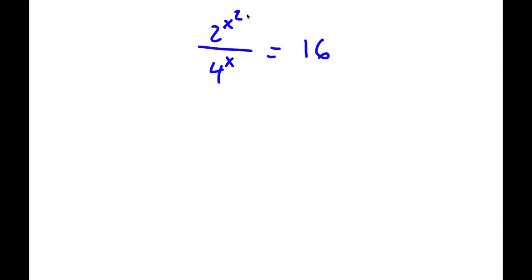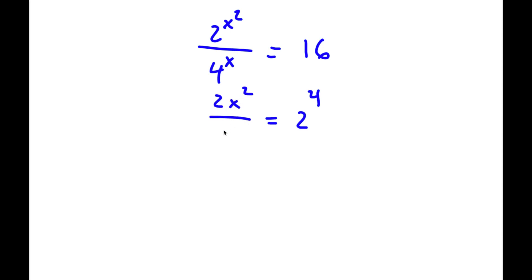Alright, so I have 2 to the power of x squared over 4 to the power of x is equal to 16. Now 16 here, this is equal to 2 to the power of 4. So now I have 2^(x²) over 4 to the power of x is equal to 2 to the power of 4.